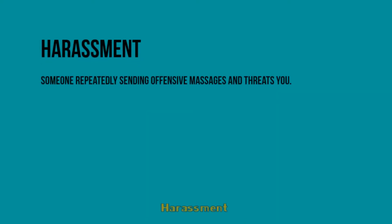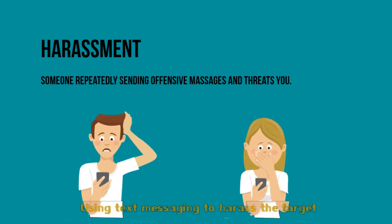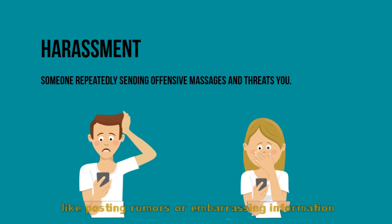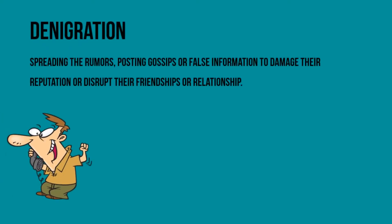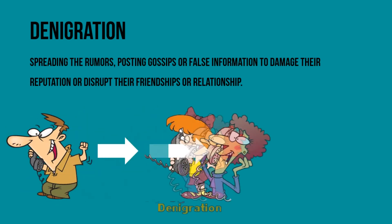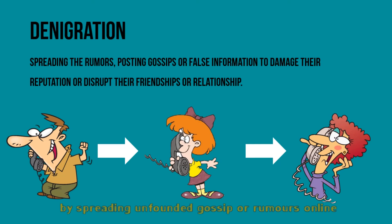Harassment: using text messaging to harass the target, like posting rumors or embarrassing information on social networking sites like Facebook or Twitter. Denigration: it is an attempt to damage the victim's reputation by spreading unfounded gossip or rumors online.